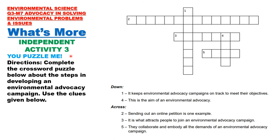Independent Activity 3 — You Puzzle Me: Complete the crossword puzzle about the steps in developing an environmental advocacy campaign. Use the clues below. Down: 1. It keeps environmental advocacy campaigns on track to meet their objectives. 2. This is the aim of environmental advocacy. Across: 2. Sending out an online petition is one example. 3. It is what attracts people to join an environmental advocacy campaign. 4. They collaborate and embody all the demands of an environmental advocacy campaign.